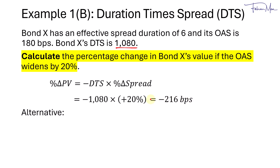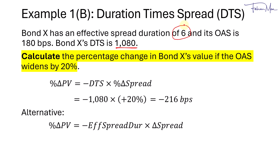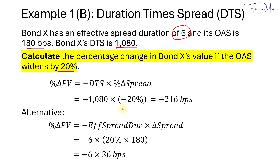Alternatively, we can take the negative of spread duration times the change in spread. The spread duration is 6, and for the change in spread we take 20% multiplied by 180 basis points, which gives us 36 basis points. So a 20% widening is equivalent to a 36 basis point increase in OAS, and that also equals negative 216 basis points.